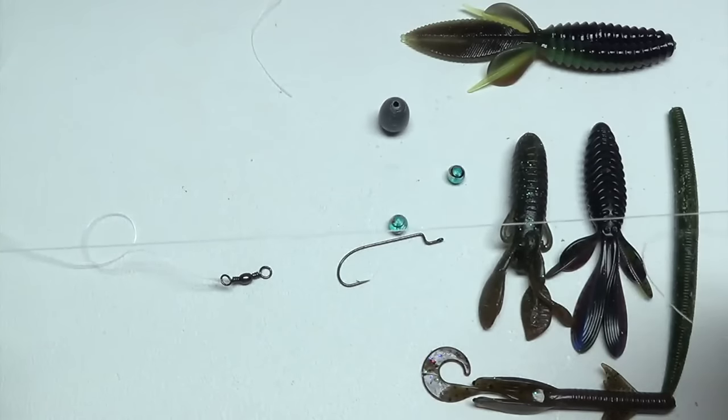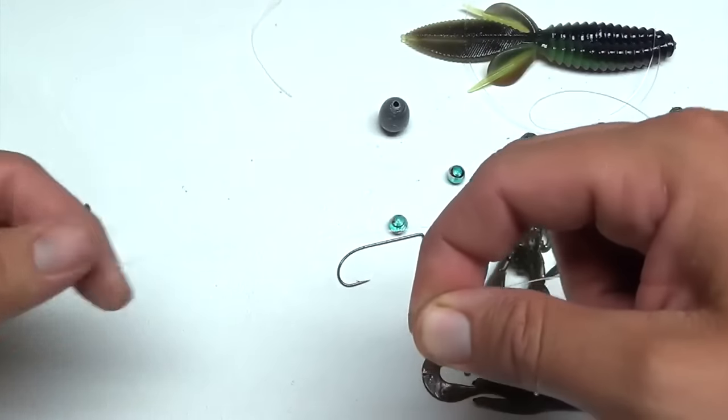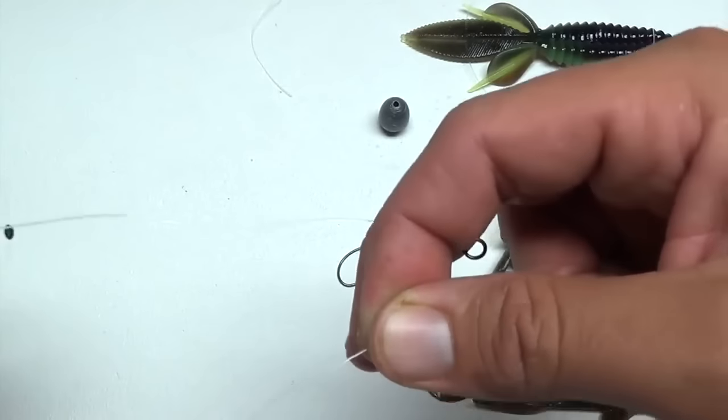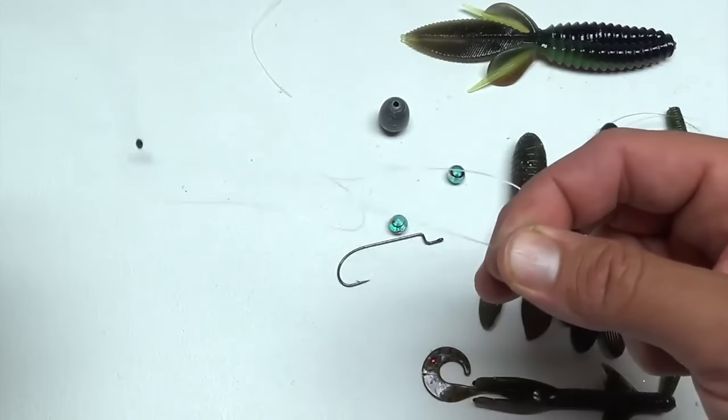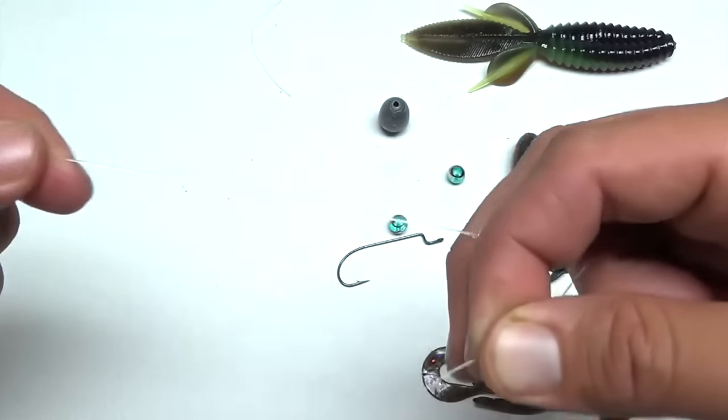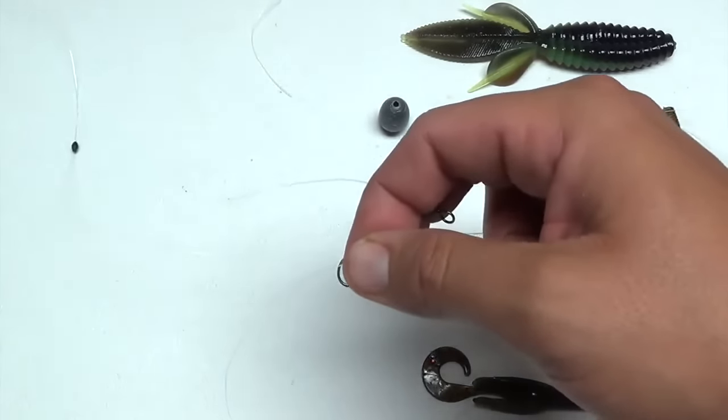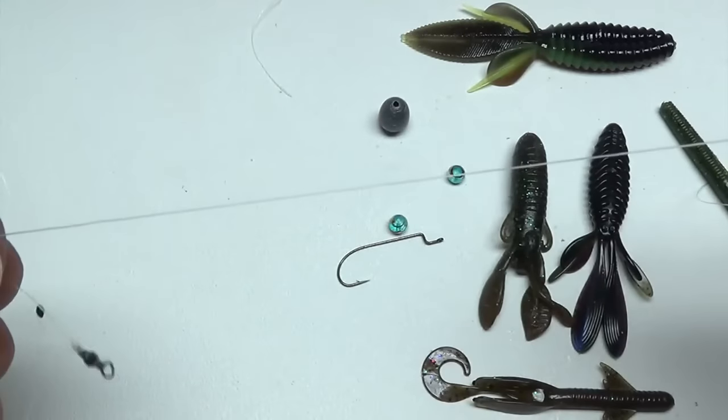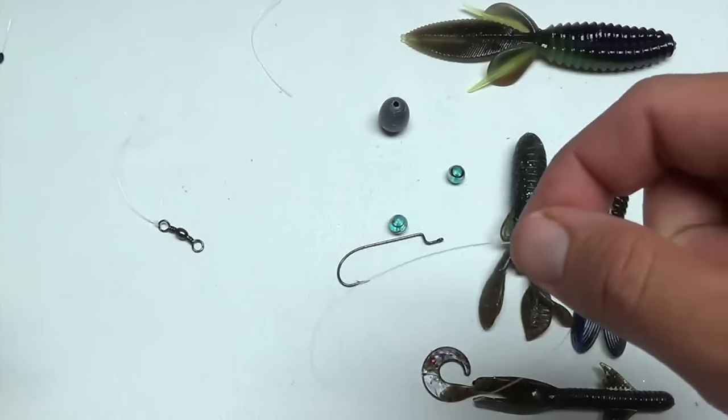I usually use 17 pound line. You just want something that's lighter than your main line. What that does is it keeps you from, if you're going to get snagged or hung up and you end up having to break off, all you're going to lose is your hook. Because this line's going to break first. Instead of your main line breaking and losing everything in your entire rig and having to retie the entire thing. So all you do now is you break off your leader and all you have to do is make a new leader and tie on a hook. So it just saves you a lot of time.